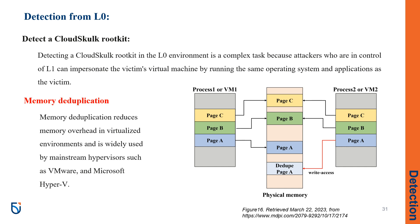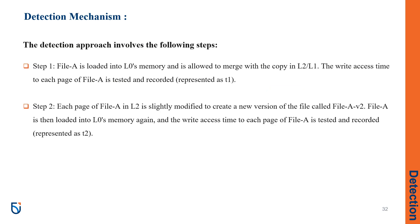Detecting a CloudSkulk rootkit in the L0 environment is complex because attackers who control L1 can impersonate the victim's virtual machine by running the same operating system and applications as the victim. This means existing virtual machine introspection techniques that simply scan the memory of the virtual machine aren't sufficient. Therefore, a detection mechanism based on a memory-saving technique called memory deduplication is proposed. Memory deduplication reduces memory overhead in virtualized environments and is widely used by mainstream hypervisors such as VMware and Microsoft Hyper-V. The detection mechanism is built by selecting unique memory pages in L2 — such as a unique file loaded in L2's memory — using memory deduplication.